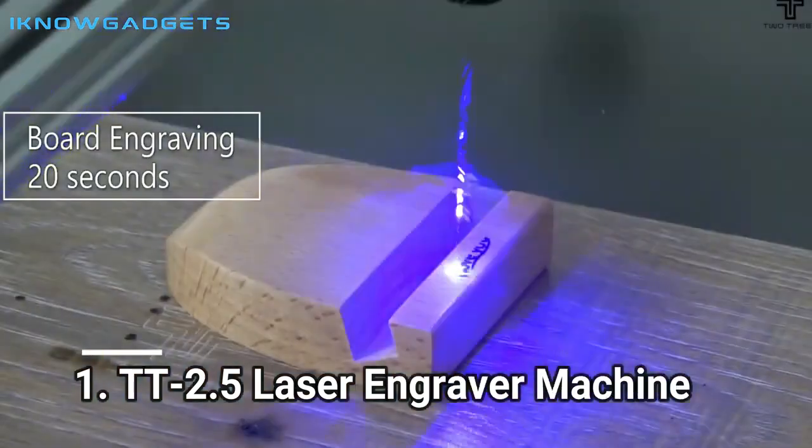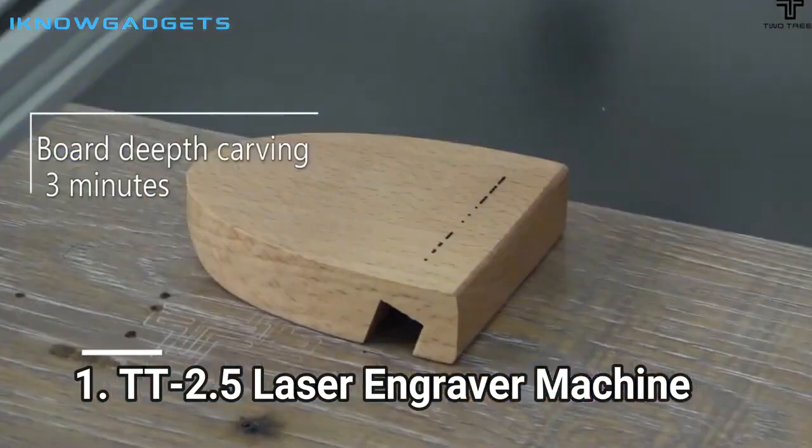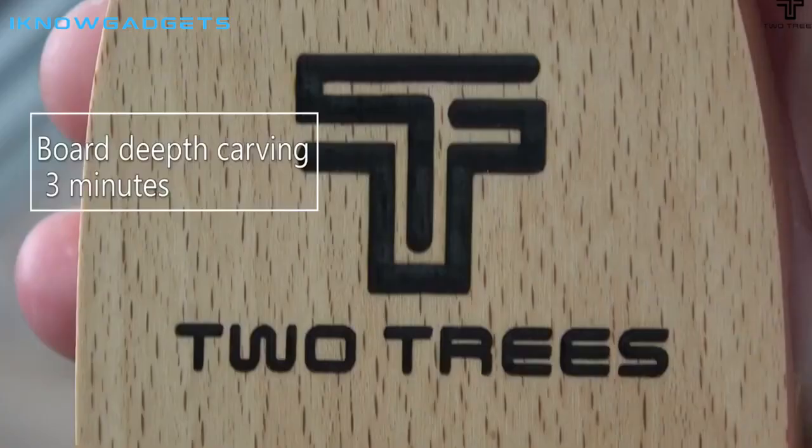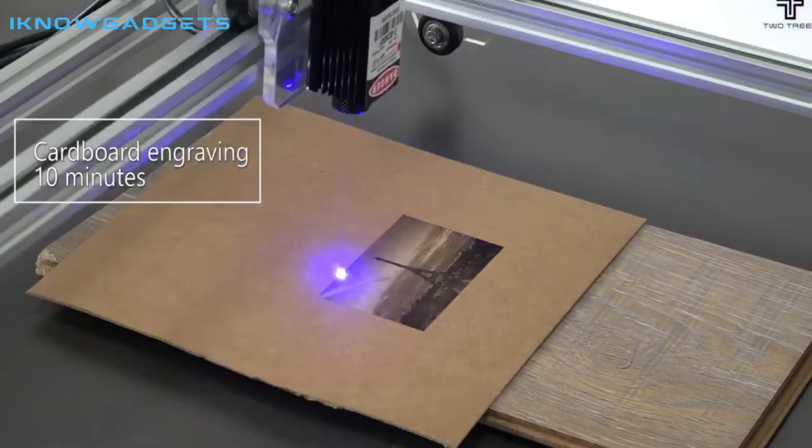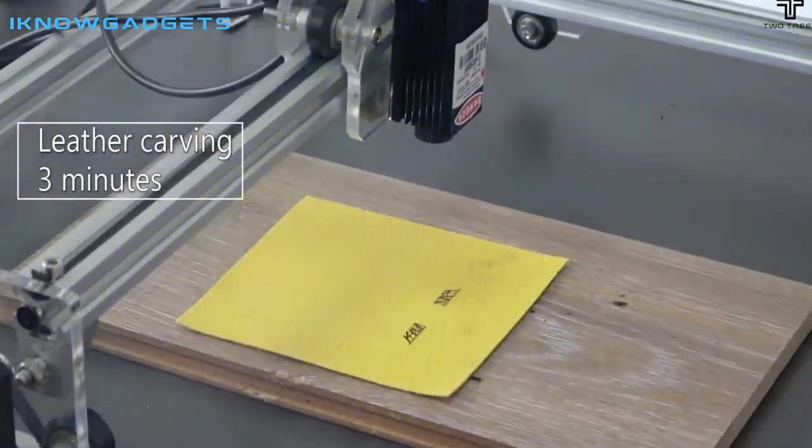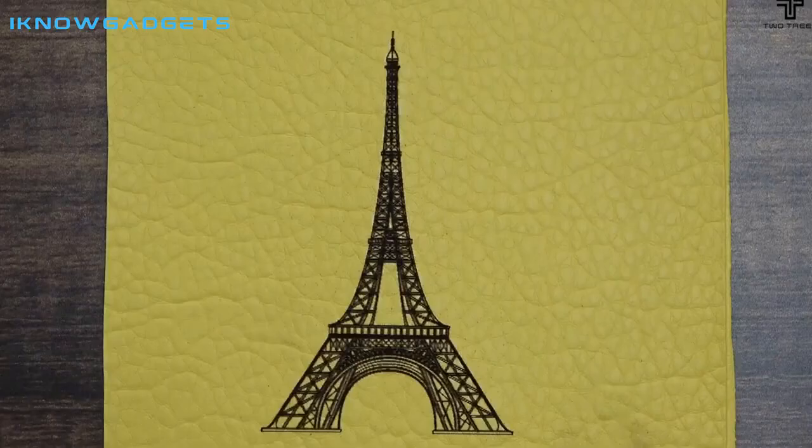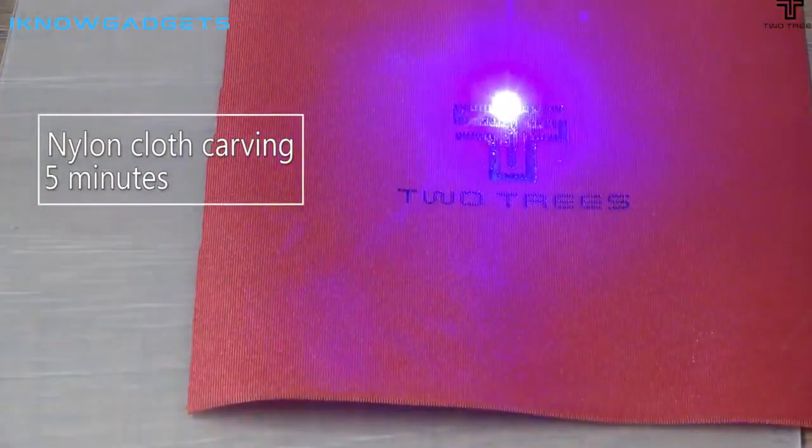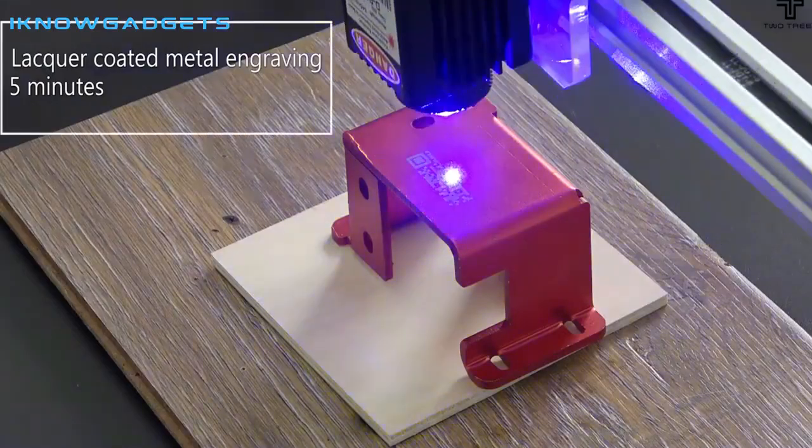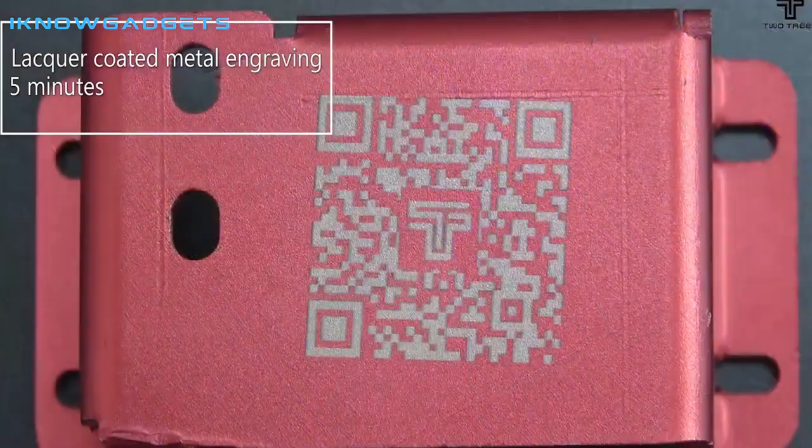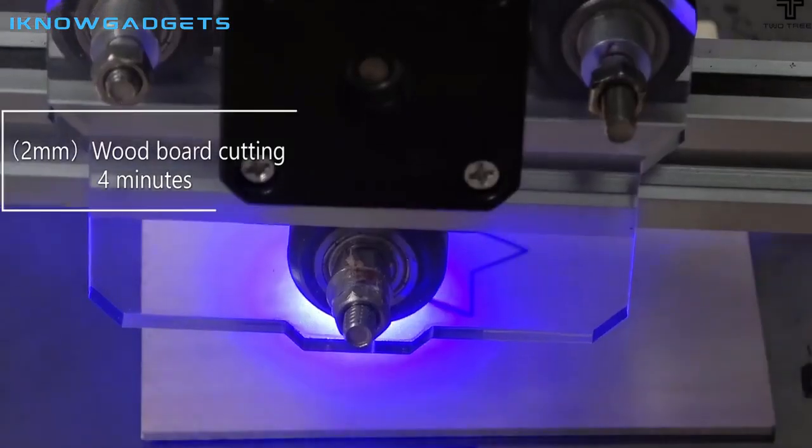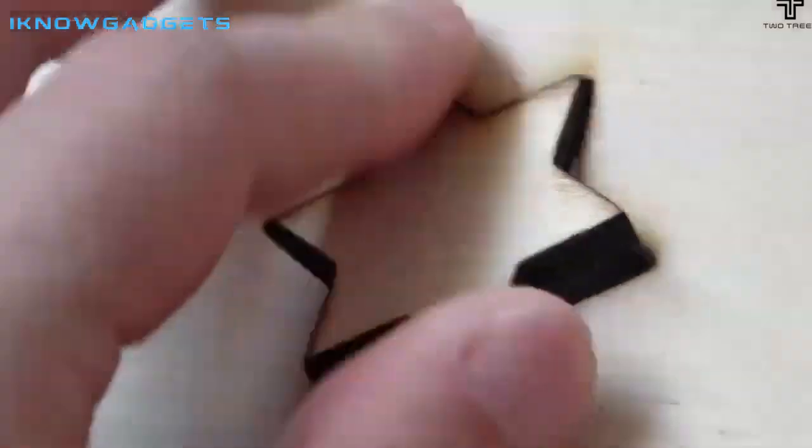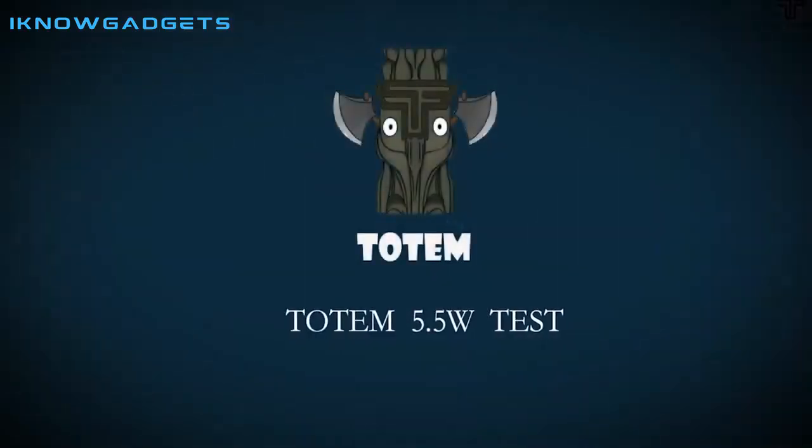Number 1. TT 2.5 Laser Engraver Machine. The TT 2.5 Laser Engraver Machine is a great tool for DIY wood engraving projects. This machine has a 300x400mm work area and comes with a 7.5W input power and 2.5W laser power. The best part is that it is pre-installed so you can get started right away. With this laser engraver machine, you'll get an in-depth look at the setup and operation of the TT 2.5 Laser Engraver Machine.